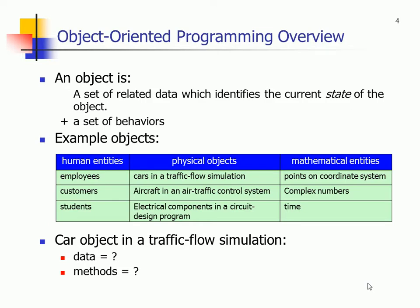An object is a set of data which identifies the current state of the object and the behaviors. For example, human entities could be employees, customers, or students. Physical objects could be cars in the traffic flow, aircraft in an air traffic control system, or electronic components in a circuit board design. Mathematical objects could be points on a coordinate, complex numbers, or time. So what data could be related to a car in a traffic flow? Things like weather, speed, and distance.